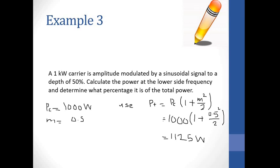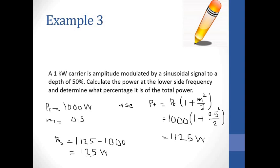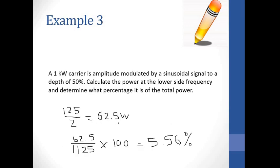The question asks to calculate the power at the lower side frequency. We separate Pc from the total power and divide the remaining sideband power by 2. After dividing, we get 62.5 watts per side frequency. Expressed as a percentage of total power, that is 5.56%.